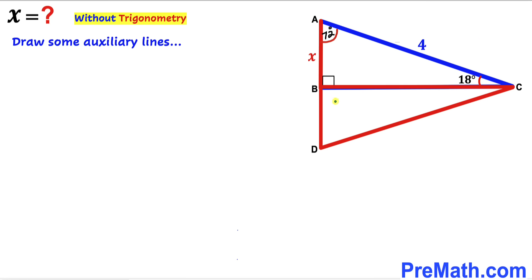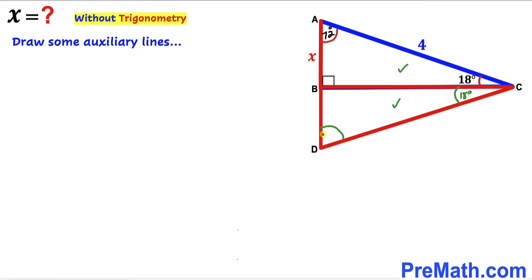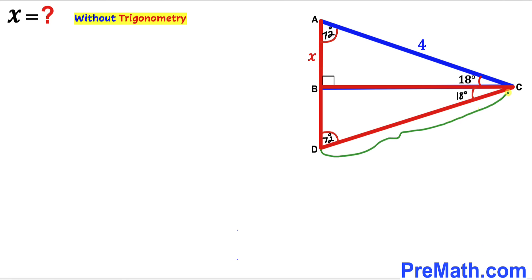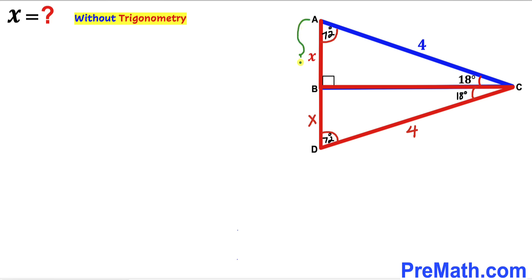We can see that right triangle BCD is congruent to right triangle ABC. Since these two triangles are congruent, this angle is 18 degrees and this angle is 72 degrees as well. This CD side length is equal to 4, and this BD length is equal to x. Therefore this whole side AD length is going to be x plus x, which makes 2x.